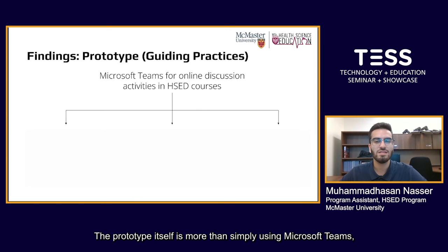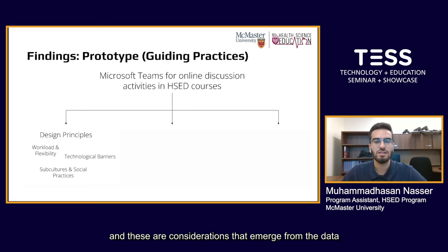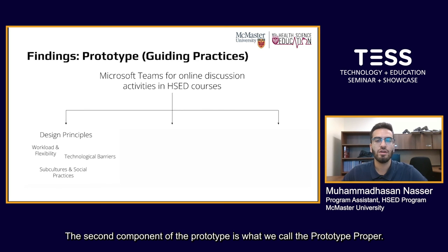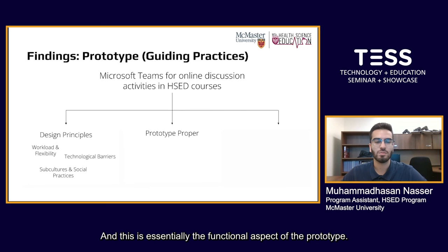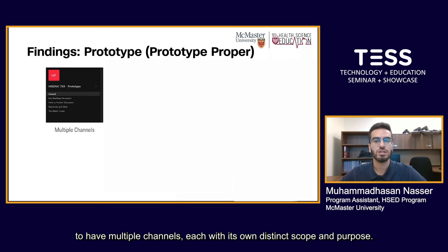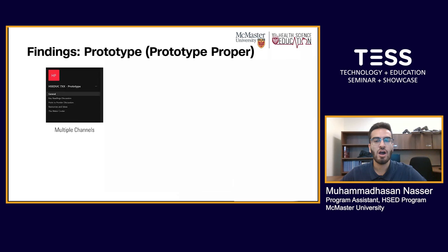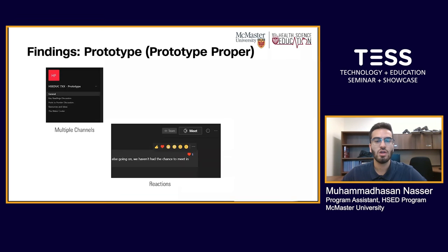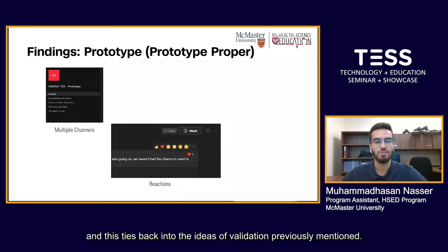The prototype itself is more than simply using Microsoft Teams and is actually composed of three components. The first being design principles — considerations that emerged from the data that we kept in mind when developing the prototype. The second component is what we call the prototype proper, the functional aspect of the prototype. The main features include the ability to have multiple channels, each with its own distinct scope and purpose, reflecting learners' ideas around increasing the diversity of content explored in online discussion. Teams also allows for reactions to posts and comments through a limited set of emojis, tying back into the ideas of validation previously mentioned.